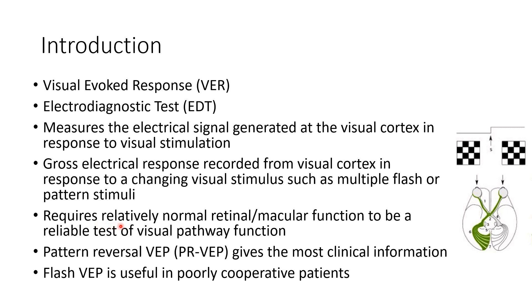VEP requires relatively normal retinal or macular function to be a reliable test of visual pathway function. There are two types of VEP: pattern reversal VEP and flash VEP. Pattern reversal VEP, or PR VEP, gives the most clinical information. Flash VEP is useful in poorly cooperative patients.